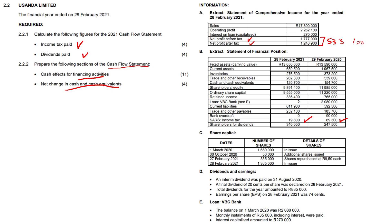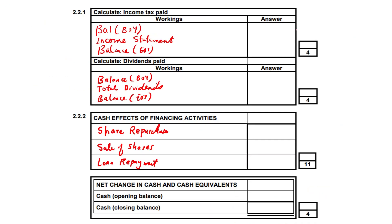So let's put those down on our answer sheet. Balance due at beginning of year: 69,300. The amount from the income statement, which we've just calculated, 533,100. And the amount due at end of year, 19,800, which is a negative figure. And once you add up those numbers accordingly, you should get 582,600 as your income tax paid.